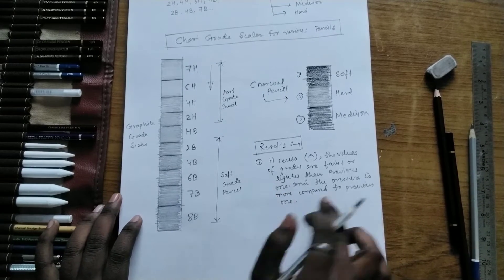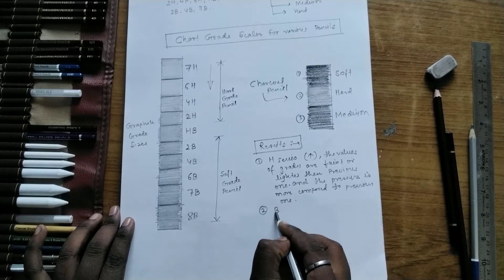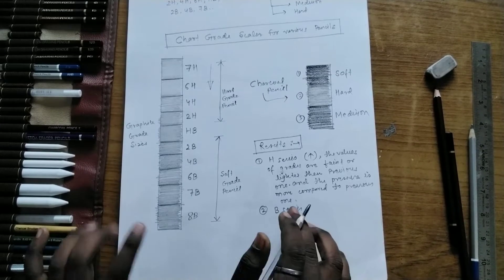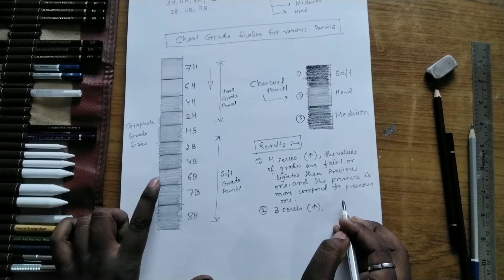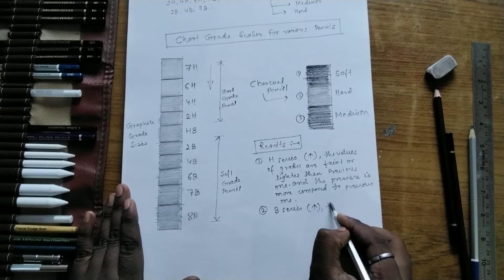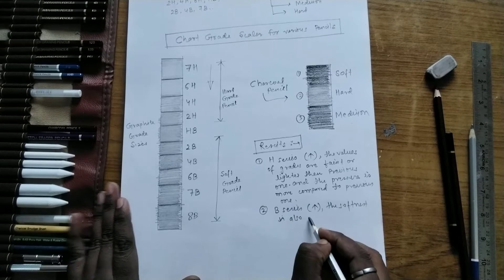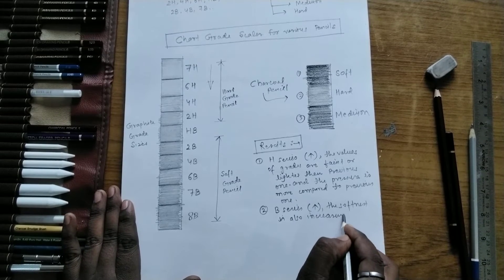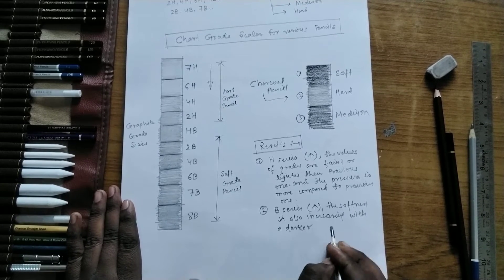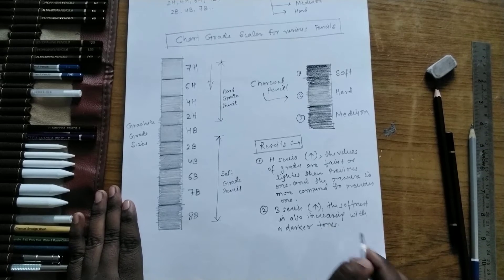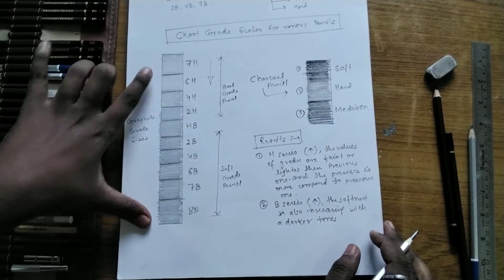This is the first conclusion. The second conclusion I got is: when we are increasing the order of 7B, the softness is also increasing, with darker tones. So this is the result from this chart.